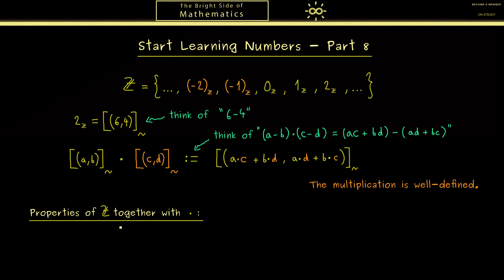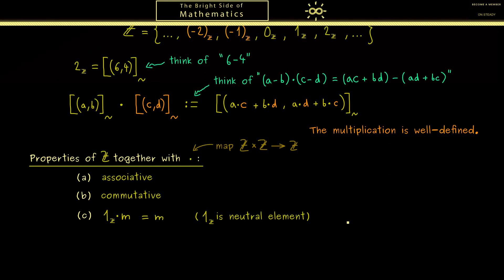Knowing this we also can just state all the properties the integers have with respect to the multiplication. And please don't forget this multiplication is now a new map defined for the integers. First, it's associative so we can set parentheses as we want. Then it is also commutative so we can change the order. And then of course the next one is very important: when we multiply with 1 we don't change anything. So 1 is the neutral element with respect to the multiplication. And the last one is simply that together with the addition we have the distributive law.